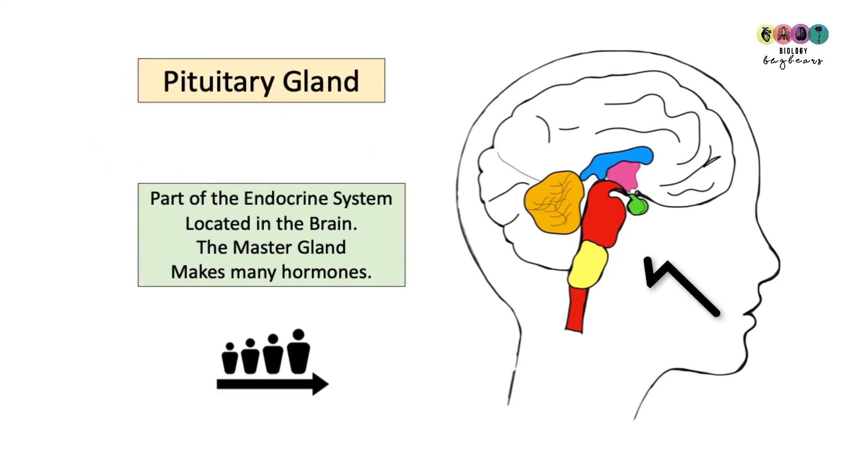Finally, there's the pituitary gland made up of those two lobes. Yes, it's part of the endocrine system but it's located in the brain so it's handy just to go over it again. It's the master gland because it makes all of those hormones, for example, growth hormone. So no harm to be revising, dipping in and out.